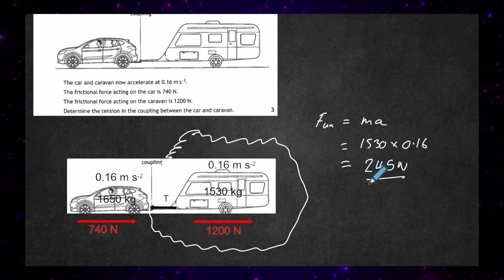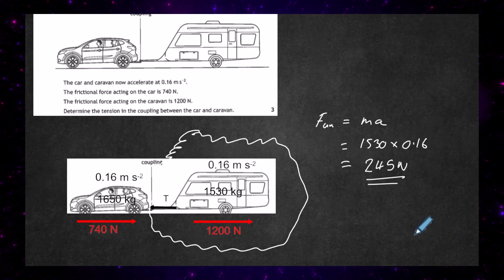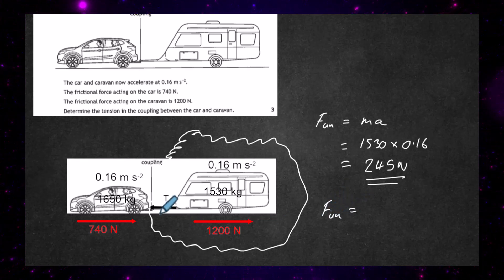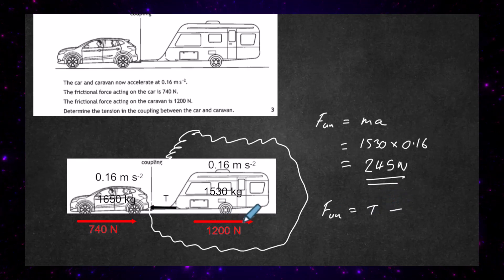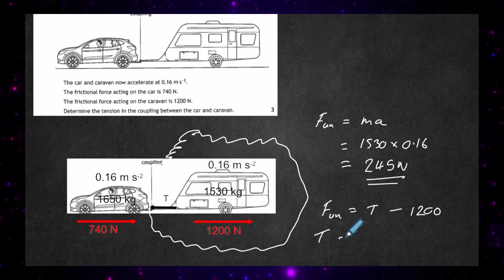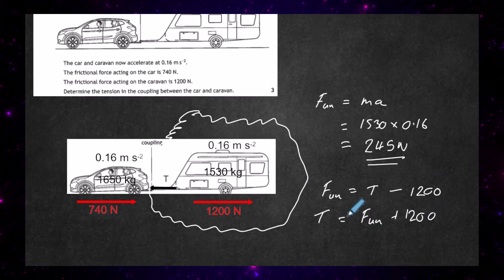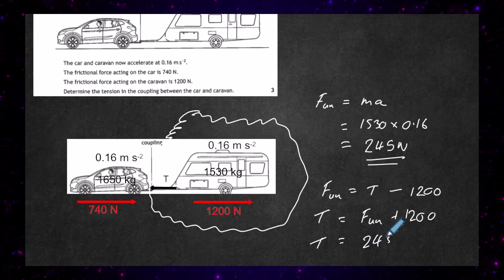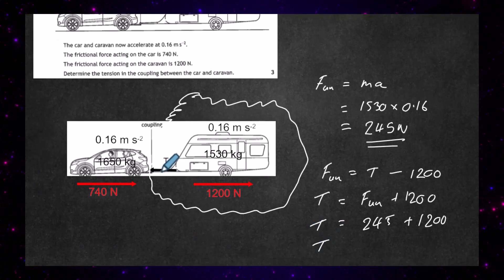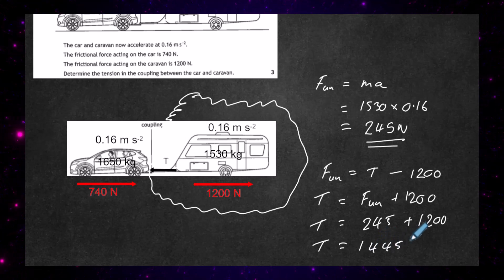Looking at the isolated caravan system, the unbalanced force is caused by the tension T forward minus the friction of 1,200 newtons. So: 245 equals T minus 1,200. Rearranging: T equals 245 plus 1,200, giving a tension in the coupling between the car and the caravan of 1,445 newtons.